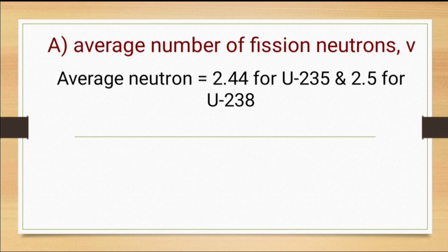First, we have to find out the average number of fission neutrons, denoted by ν. This is the average number of neutrons thrown out in each act of fission by thermal neutrons. This number is 2.44 for uranium-235 and ν is equal to 2.5 for natural uranium or uranium-238. Since the abundance of uranium-235 is very less and it is used as nuclear fuel, it undergoes the fission reaction by thermal neutrons, so ν should be taken as that for uranium-235.